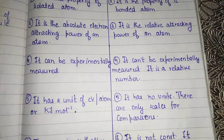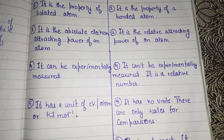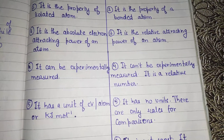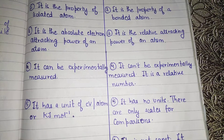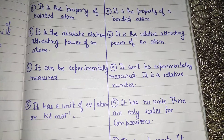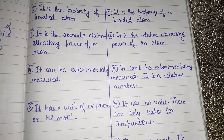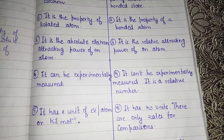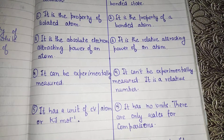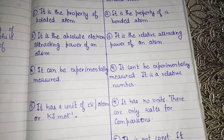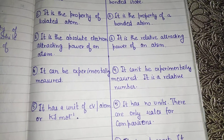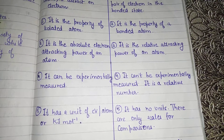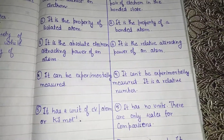The fifth difference concerns units. Electron gain enthalpy — also referred to as electron affinity — has a unit of electron volt per atom or kilojoule per mole. In the case of electronegativity, it has no unit, because it is a relative number expressed on the basis of comparison scales. Here we use scales of comparison where no units are applied.